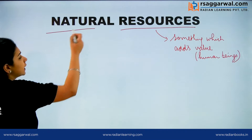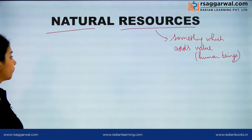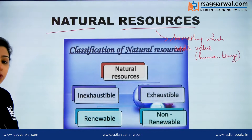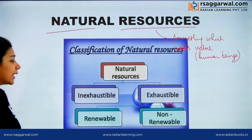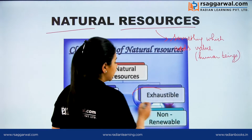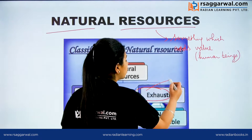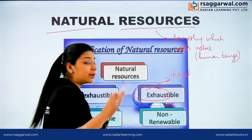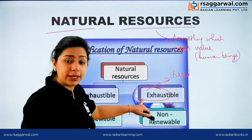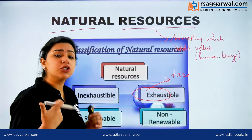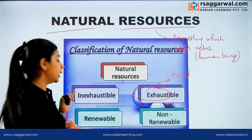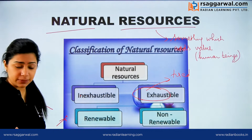We can classify natural resources into two categories: Inexhaustible and Exhaustible. Exhaust means finished — if something has been used up and finished, we call it an Exhaustible Resource. And if those resources are not finished, we call them Inexhaustible Resources.